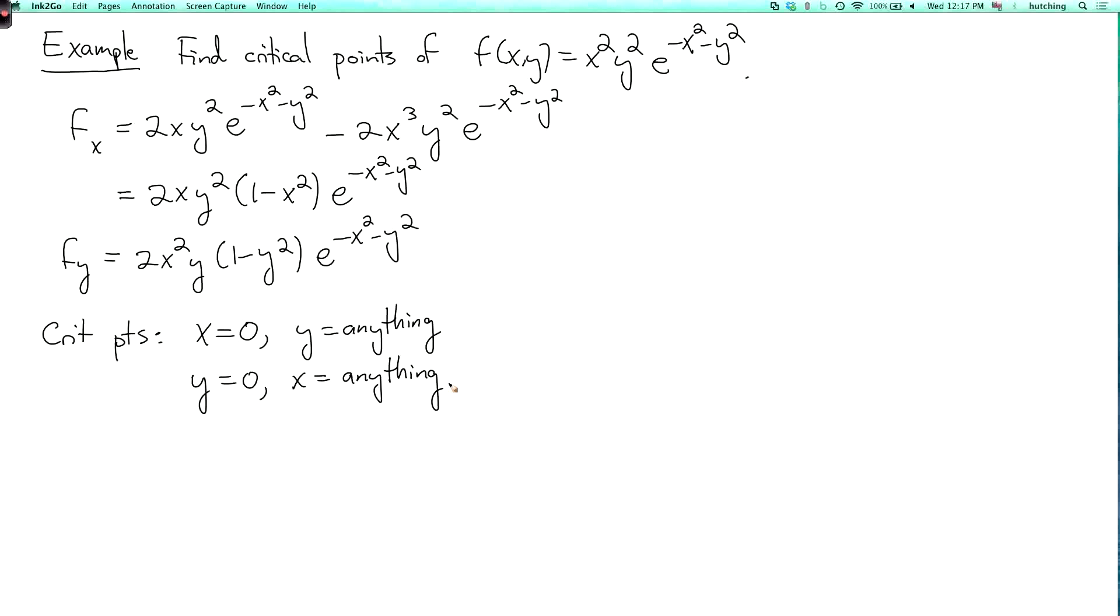Now if we consider where neither x nor y is equal to 0, then the 2xy squared or 2x squared y doesn't vanish, and the exponential function doesn't vanish. So the only way we can have a critical point is if both 1 minus x squared and 1 minus y squared vanish. So the remaining possibility is that x equals plus or minus 1, and y equals plus or minus 1. So this is four isolated points.